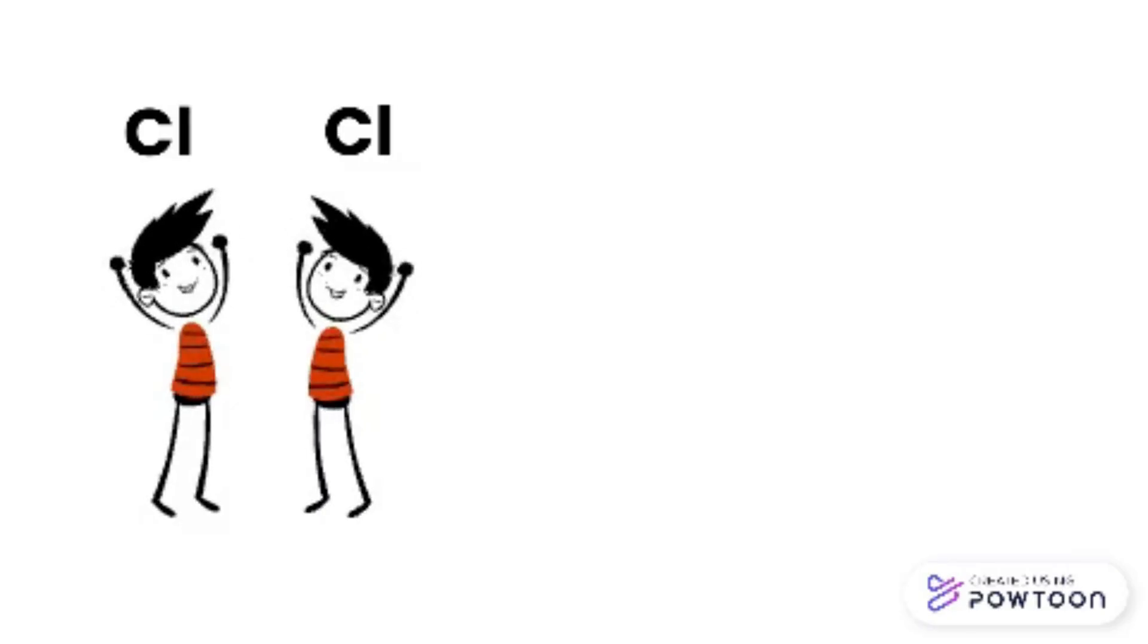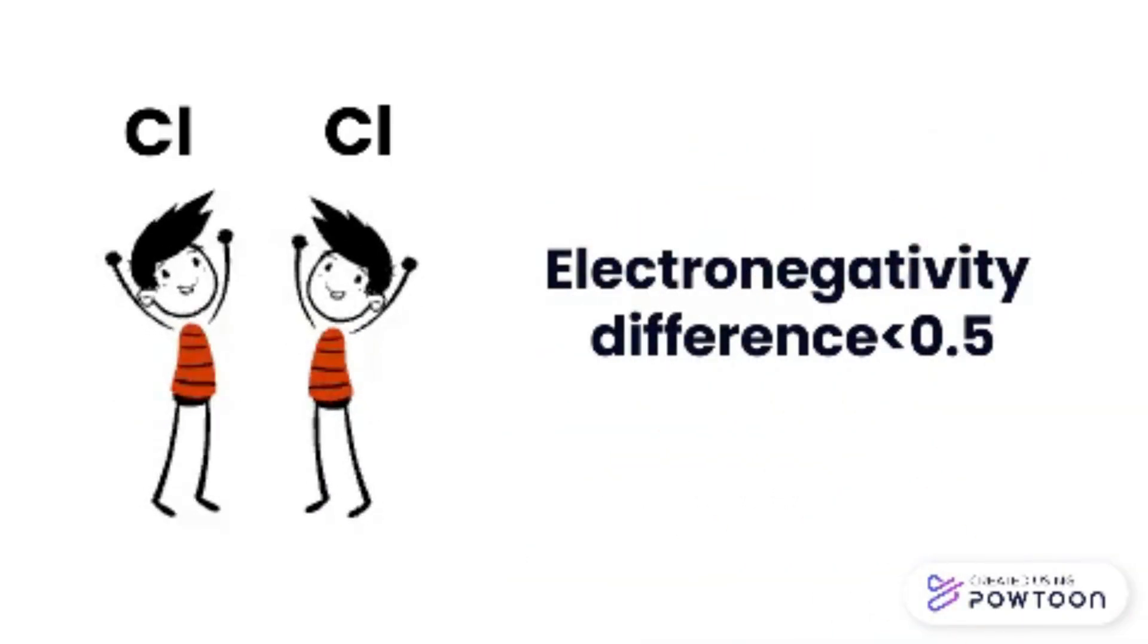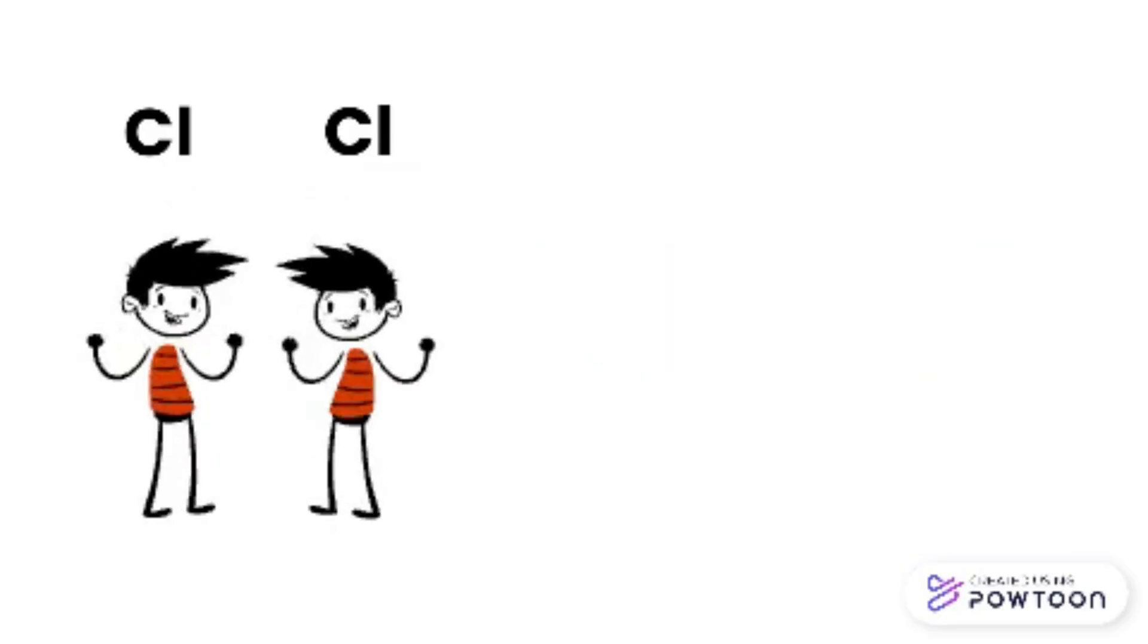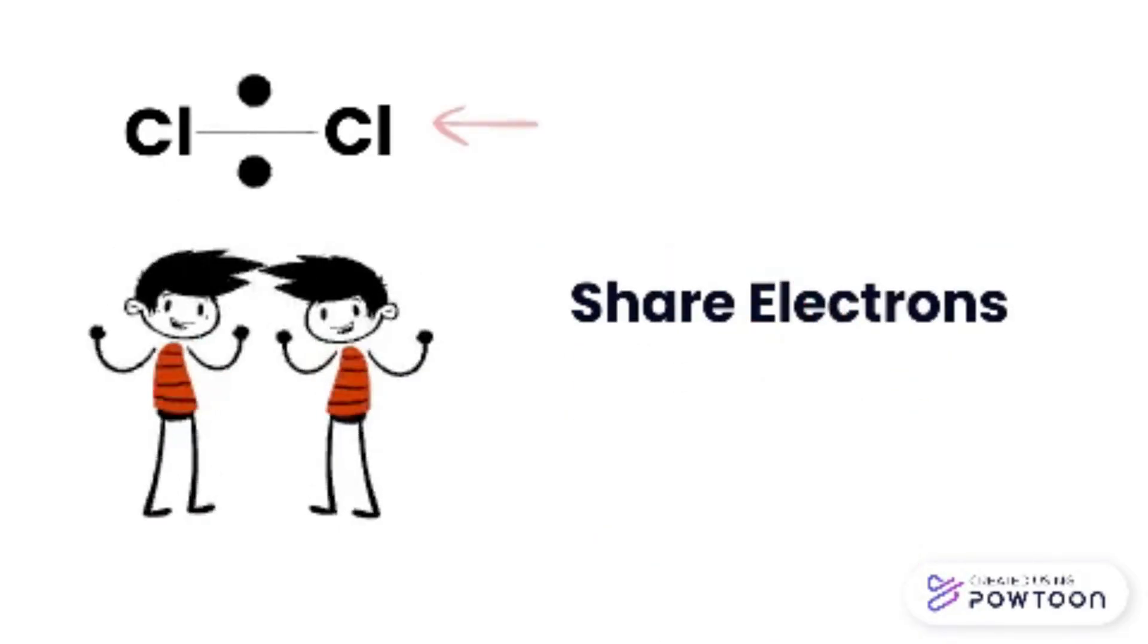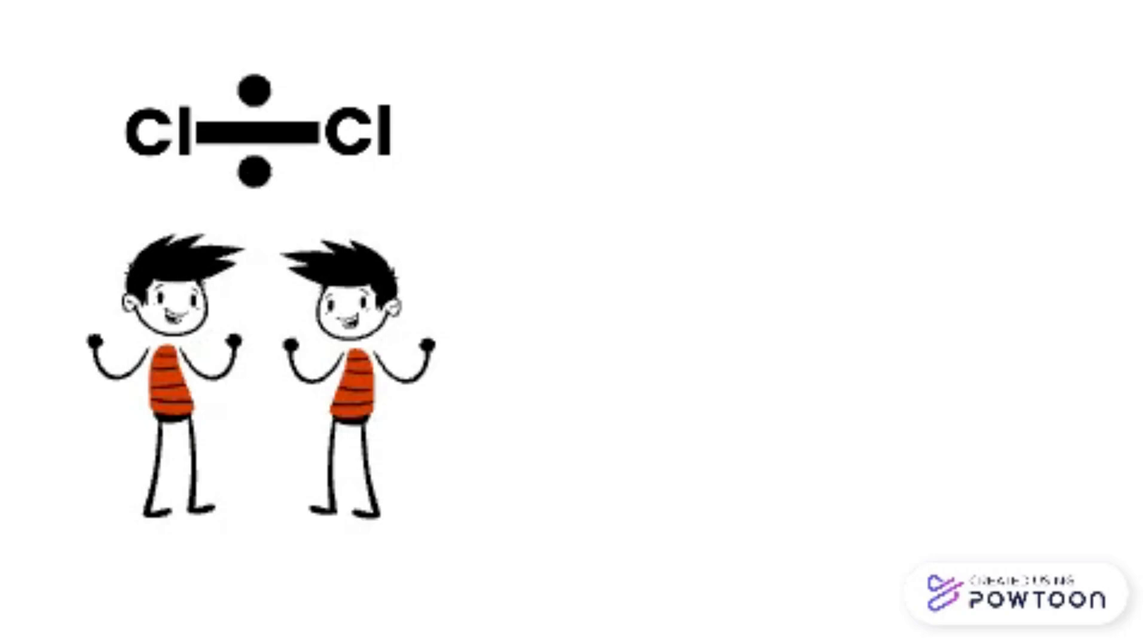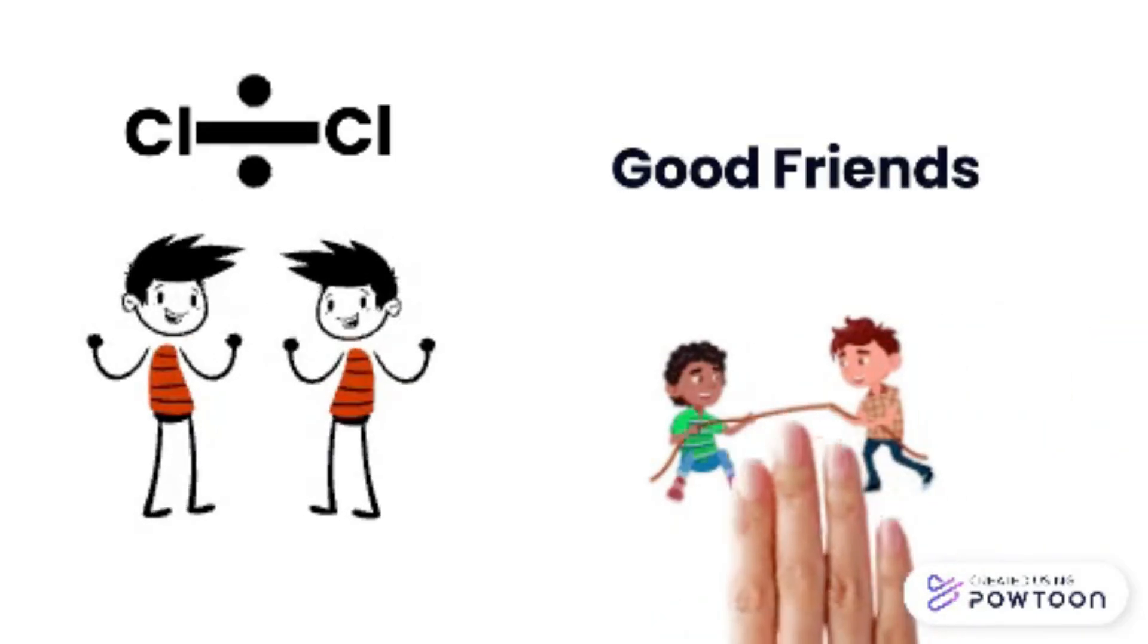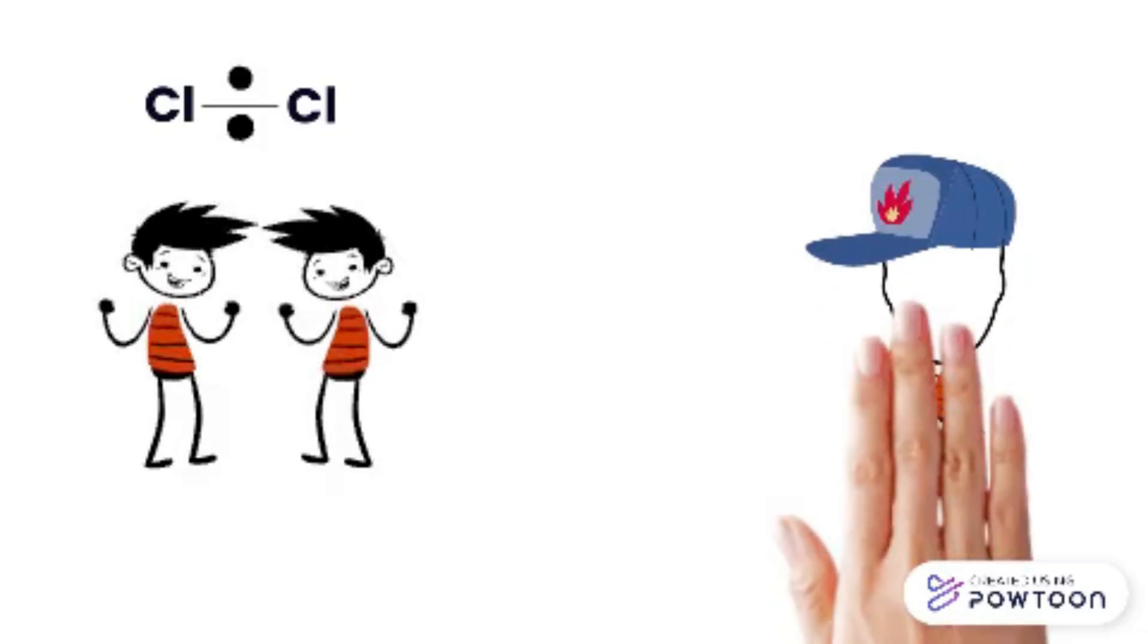How is it formed? If two atoms with electronegativity difference less than 0.5 share electrons, then a pure covalent bond is formed which is non-polar. They behave like good friends because neither atom pulls the electron towards itself. So, how we are going to break down such a pure covalent bond? For this, we need a helper.